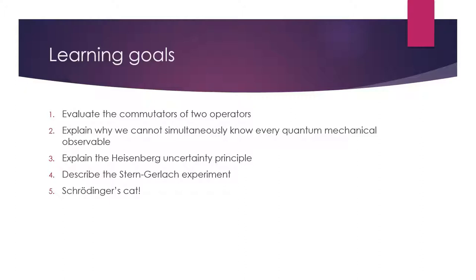At the base level, the Heisenberg uncertainty principle means that we cannot describe a quantum mechanical particle completely, unlike a classical particle. In classical physics, you were tasked with finding things like the position, velocity, kinetic energy, and so on of a particle moving along some trajectory. In quantum mechanics, we can't do that. There is some fundamental uncertainty between some kinds of quantum mechanical observables — and it turns out that it is only some kinds. So how do we tell whether or not we can know two observables simultaneously?